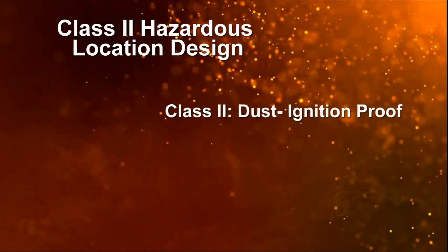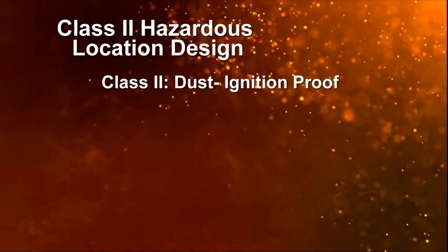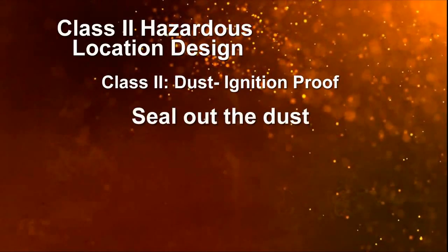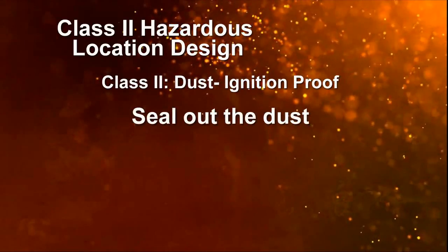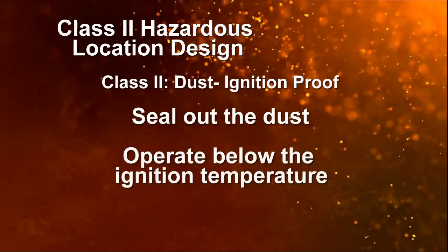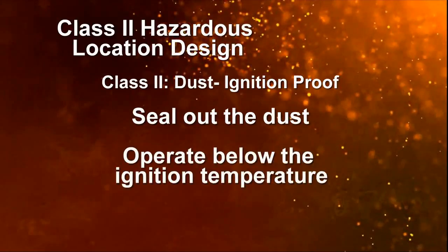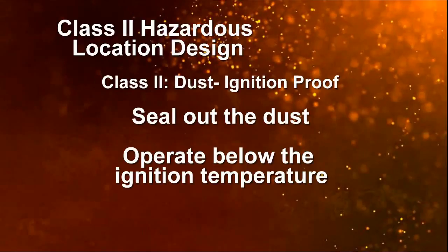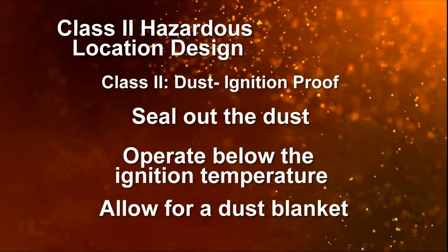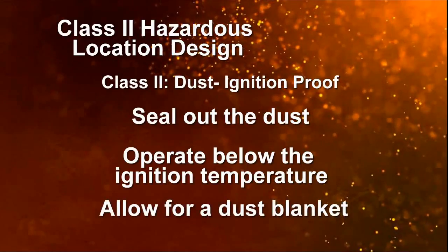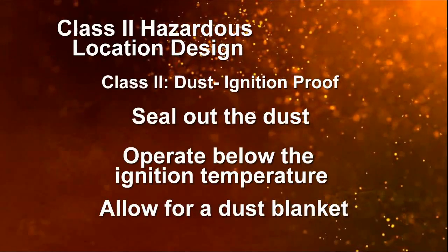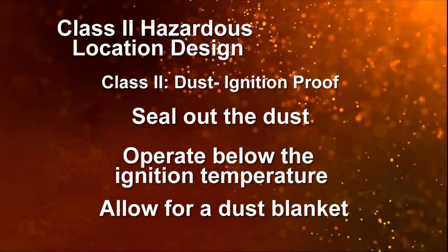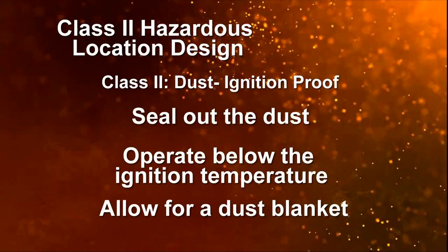Class II equipment has a different set of requirements: one, it must seal out outside dust; two, it must operate below the ignition temperature of the hazardous substance; and three, it must also allow for a dust blanket — the buildup of dust collecting on top of the device that can cause it to run hot and ignite the surrounding atmosphere.